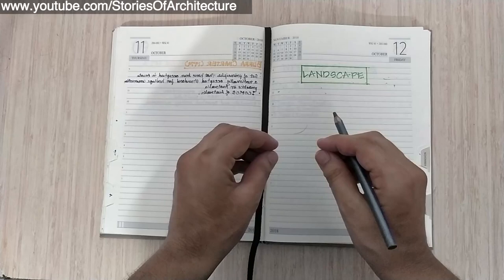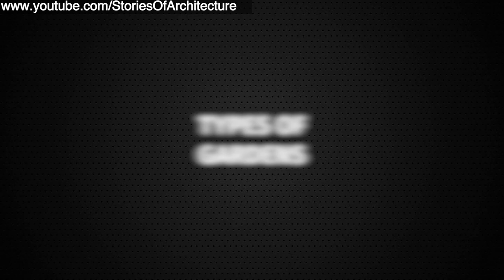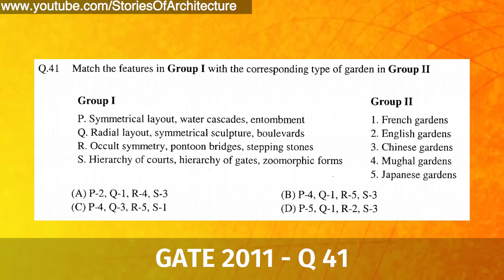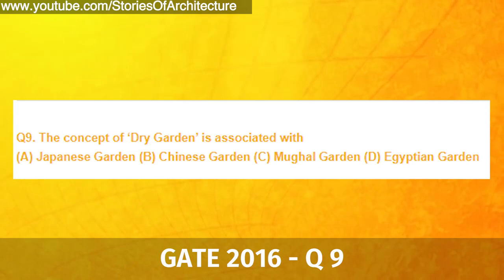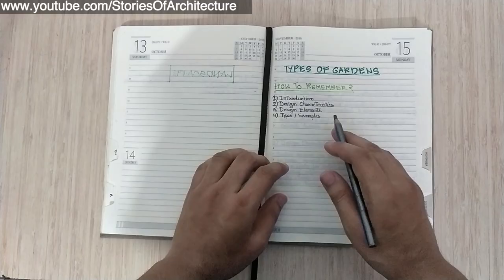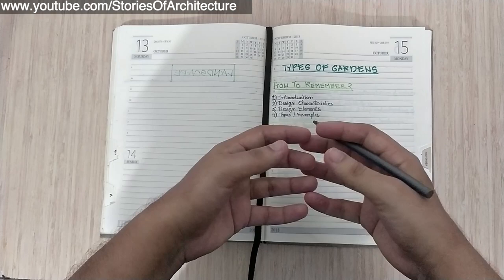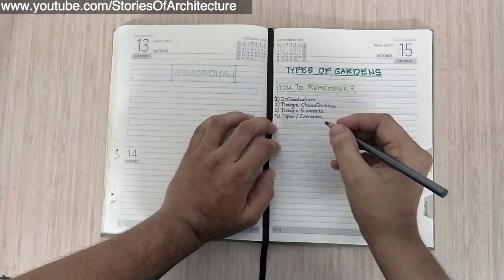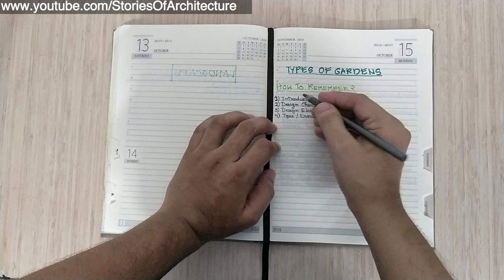Hey everyone, welcome to Stories of Architecture. In this video we will talk about the different types of gardens. There are many questions that can come up from this topic, and many questions have been asked in GATE Architecture related to types of gardens. Let me tell you what sequence can be established so that it is easier to remember the different types of gardens, their definitions, and their properties.